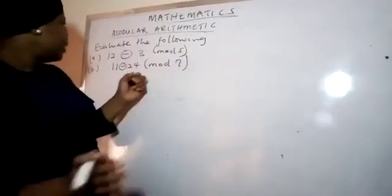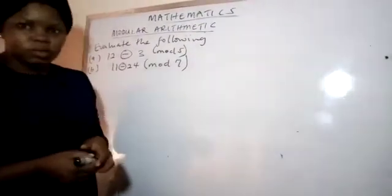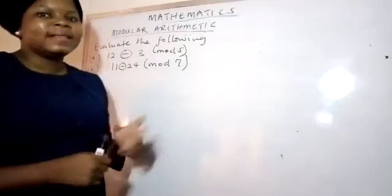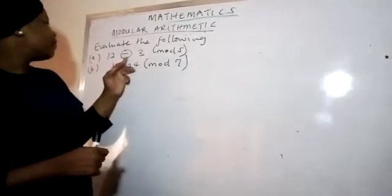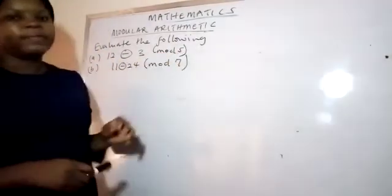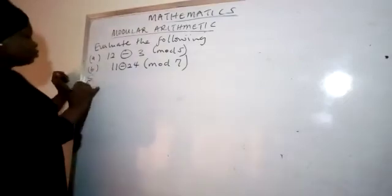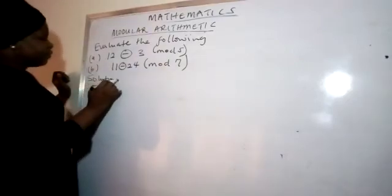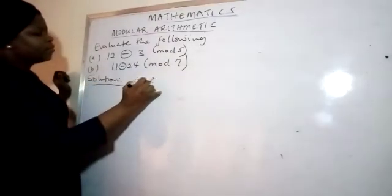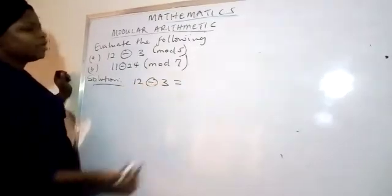Let's quickly look at these two examples under subtraction. If you look at this, we have 12 minus 3 in mod 5. How do we do that? 12 minus 3 in mod 5. 12 minus 3 is going to give me what? 9.